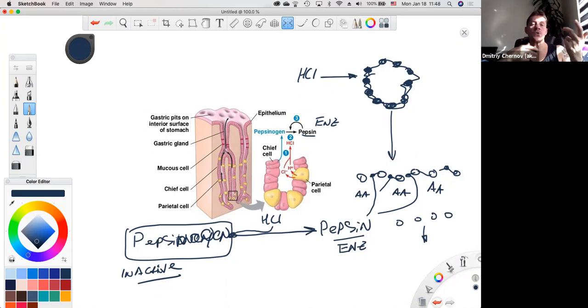And only then pepsin can act on these peptide bonds and separate amino acids into its simple form so those amino acids would be absorbed in the small intestine into the blood. This is chief cells, chief cells, and parietal cells. Pepsinogen and pepsin.